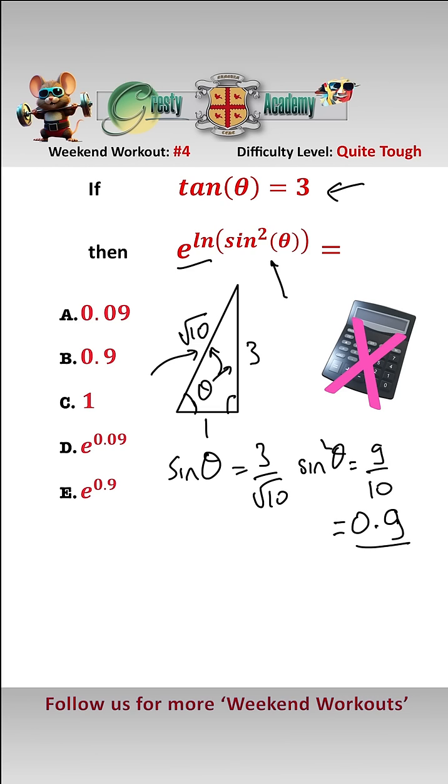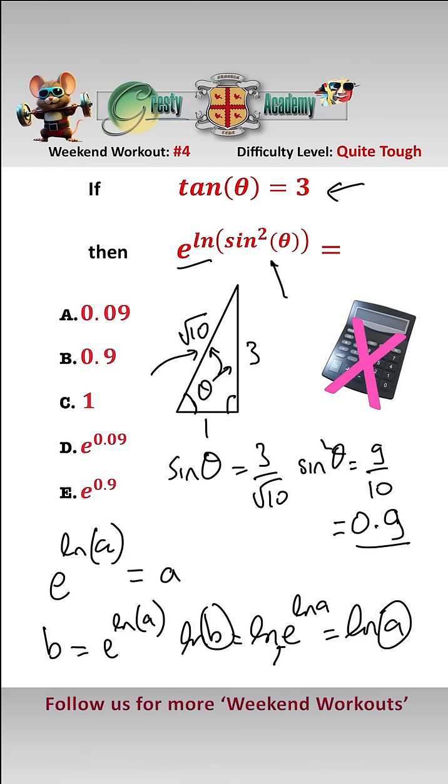Now let's look at e to the power of ln of anything. Well, e^ln(anything) equals anything. Let's check that. Say b = e^ln(a), and take logs of both sides. So log b = log(e^ln(a)). Well, log base e of e is 1, which just equals ln(a). So b = a.